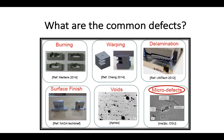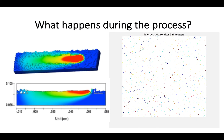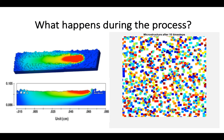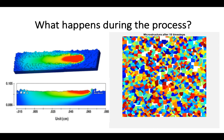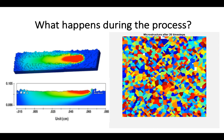A material's microstructure is what defines the part's properties. Micro defects are observed on the material microstructure with the aid of a microscope. To try to avoid these effects, it is essential to select the right process parameters, which requires a great understanding of the phenomena happening during the process. During an additive manufacturing process, a highly energetic laser beam hits the powder, scanning it, and the material is heated to a very high temperature and melted.